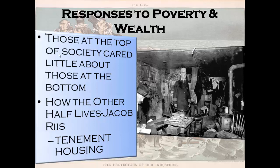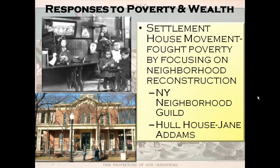Nothing was done about tenement houses because local governments didn't want to put people out on the street. To give you an idea of density: in 1894 in New York City, there were 986.4 people per square mile. Another response to poverty was the settlement house movement, which attempted to fight poverty by focusing on neighborhood reconstruction — taking services to immigrants where they were. One of the first was the New York Neighborhood Guild; the most famous was Hull House, founded by Jane Addams in Chicago. These settlement houses provided English lessons, daycare, healthcare, gym facilities, legal aid, and recreation.